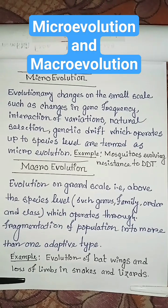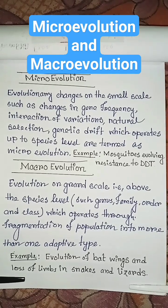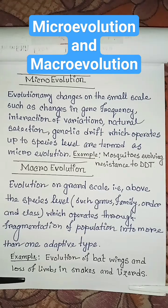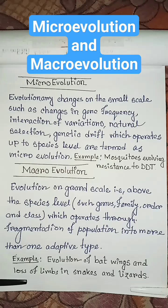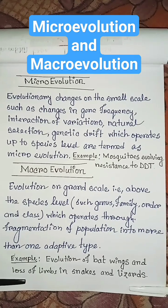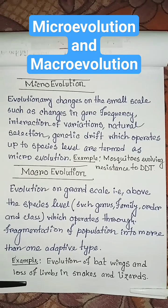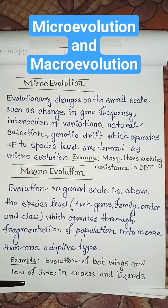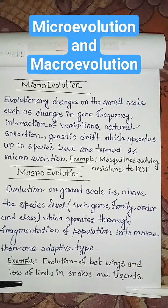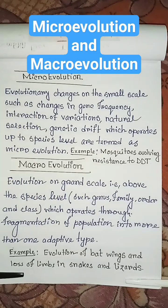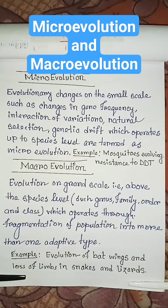Next, macro evolution. Evolution on a grand scale, that is above the species level — such as genus, family, order, and class — which operates through fragmentation of population into more than one adaptive type, is called macro evolution. Example of macro evolution: evolution of bat wings and loss of limbs in snakes and lizards.